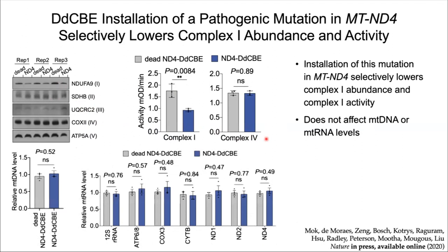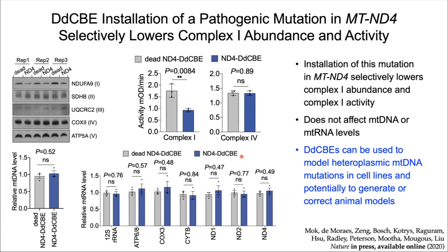Cells treated with DdCBE also did not appear to have altered levels of mitochondrial DNA or RNA levels. This set of results suggests that DdCBEs can be used to model heteroplasmic mutations in cell lines and potentially even in animal models. Their ability to be used as a gene therapy tool will have to be evaluated further as more research is done in this area.